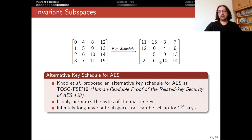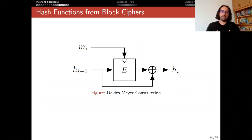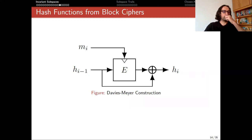Let's move on to hashing modes of block ciphers. Since we couldn't turn our invariant subspaces into truncated differential attacks, we wanted to look at hashing modes of AES and check if we can find collisions for hashing modes of AES.